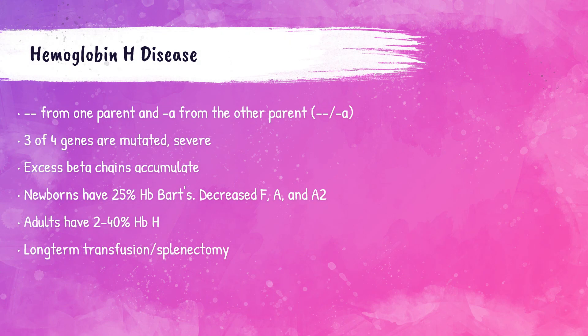Hemoglobin H disease is caused by a patient inheriting dash-dash from one parent and dash-a from the other parent, resulting in three alpha chain genes being absent — genotypically --/-a. This causes excessive beta chains to accumulate because there are fewer alpha chains to bind with, and hemoglobin A, A2, and F are decreased. Hemoglobin Barts is a tetramer of gamma globin chains seen during the newborn period; its presence indicates one to four alpha chain genes are dysfunctional. In hemoglobin H disease, 25% of the total hemoglobin in the newborn will be hemoglobin Barts. Patients with hemoglobin H disease will need long-term blood transfusion therapy and possibly splenectomy.